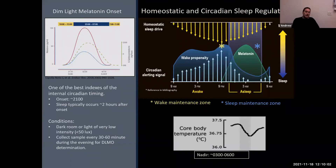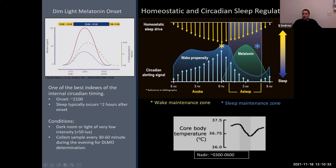Because melatonin and core body temperature have robust rhythms correlated with the sleep-wake cycle, they make great biomarkers for understanding how an individual's circadian clock is embedded in the solar day. Melatonin onset — the initial rise of plasma melatonin in the evening — is the most commonly used index of circadian timing, typically around 9pm in the average person, with sleep usually occurring within two hours. This is called the dim light melatonin onset, or DLMO, because melatonin is very sensitive to light and must be collected in dim or no light to be accurate.